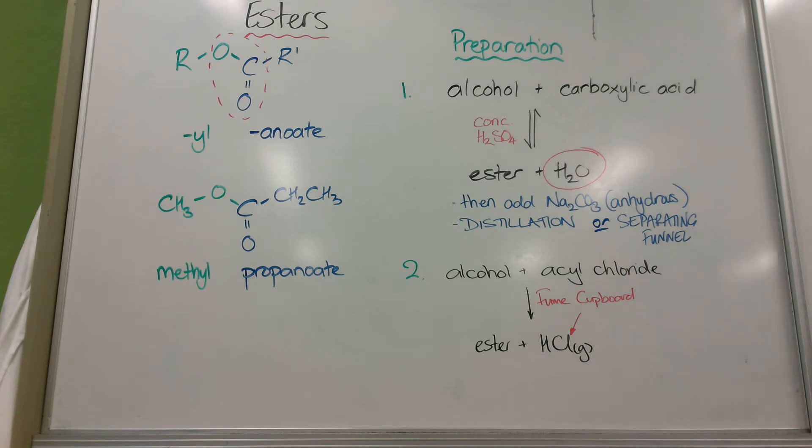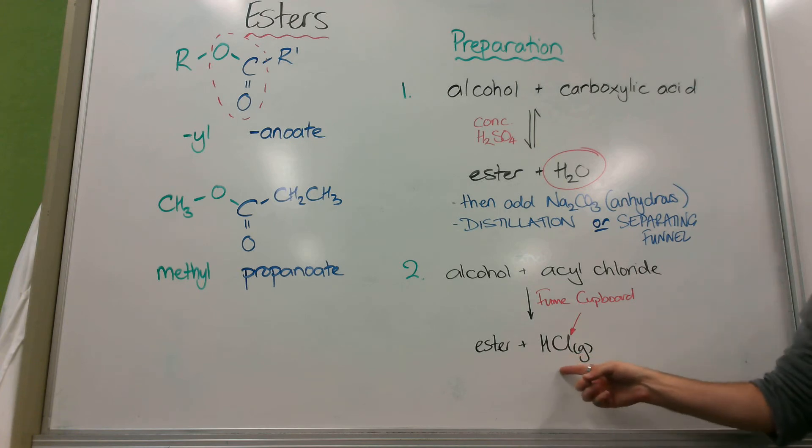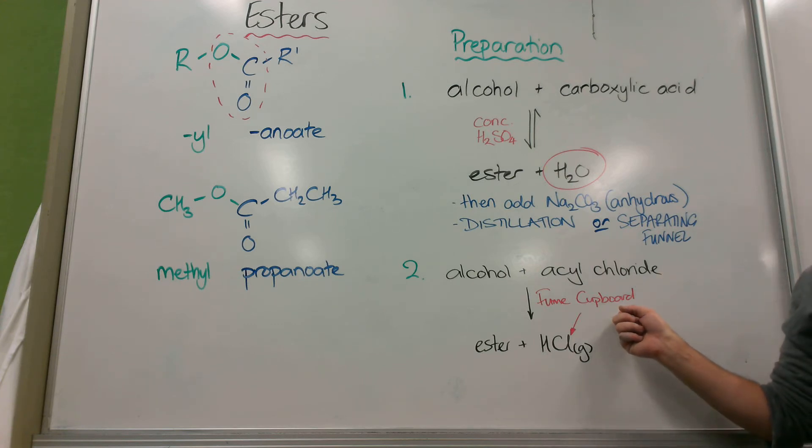The easier way that I'm not allowed to let you do because we'd have to use the fume cupboard for it is this way. We'd turn the carboxylic acid into an acyl chloride first. So we'd use thionyl chloride or one of those. Then we'd just react with the alcohol. Nothing else required. But it fumes. And the fumes that come off are HCl gas. Because remember, every time an acyl chloride reacts, it makes HCl.